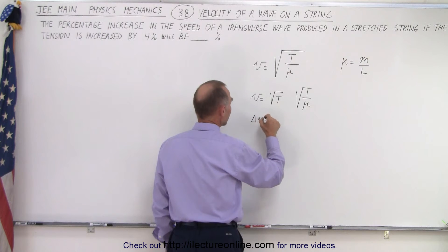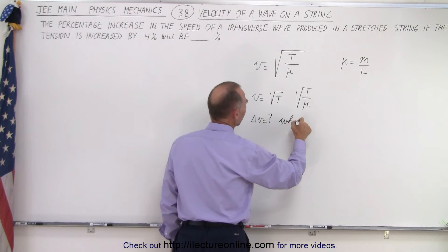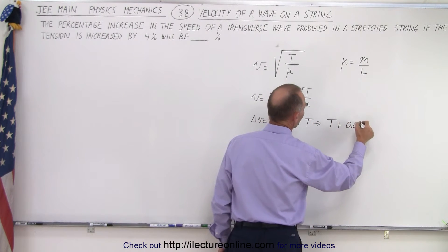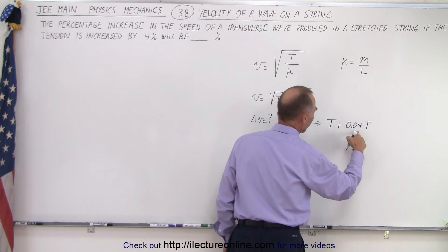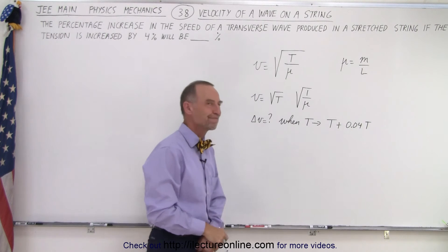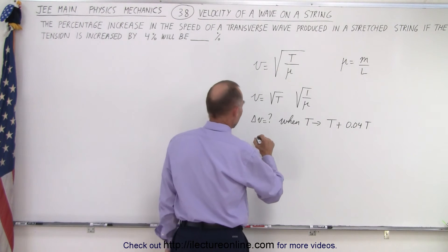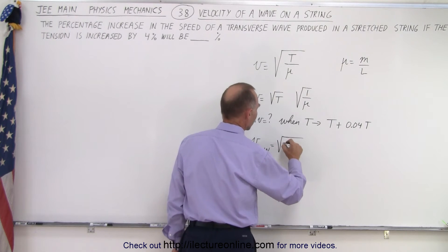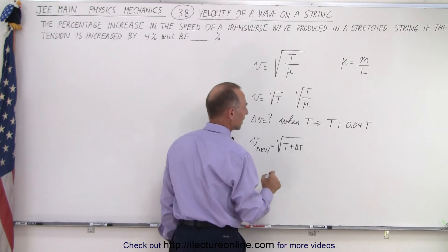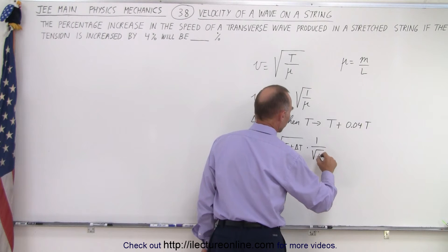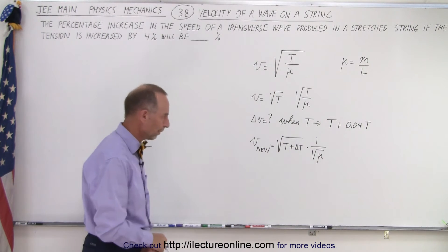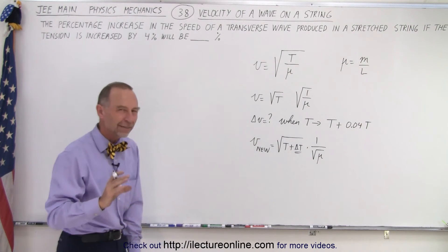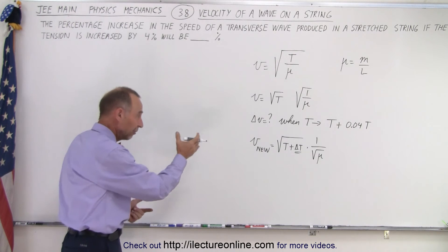What we can say is delta V is equal to question mark when T becomes T plus 0.04T. In other words, when we add 4% to the value of T. So essentially, what we get is the new V is going to be equal to the square root of T plus delta T times 1 over the square root of mu. We could put the square root over the 1 as well. So we know that this is a constant and we're going to change this by 4%. Now, delta T — 4% — is a small value of the initial value.